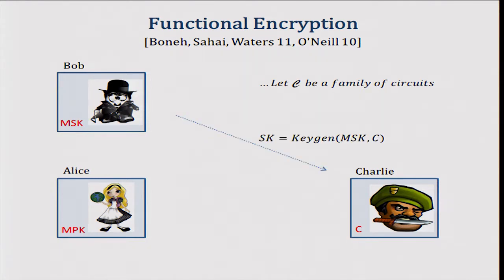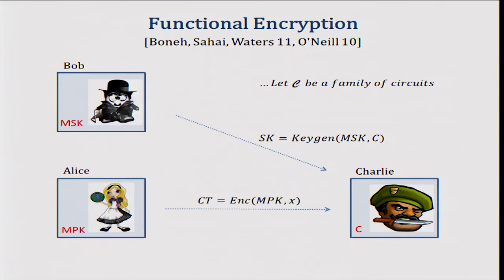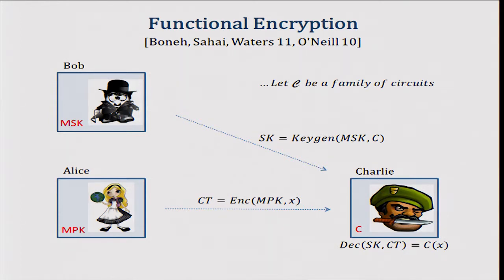What Bob can do now is run the special key generation algorithm on the master secret key and the circuit C to generate a specific token for the circuit, and he can give the secret key to Charlie. Later on, when Alice encrypts using the public key a particular message X, then Charlie can run a special decryption algorithm using the secret key associated with the circuit and the ciphertext, and he's supposed to learn C of X.